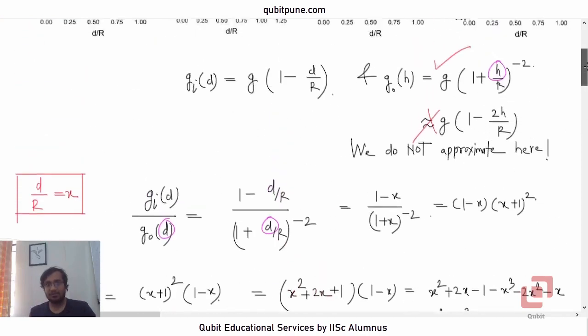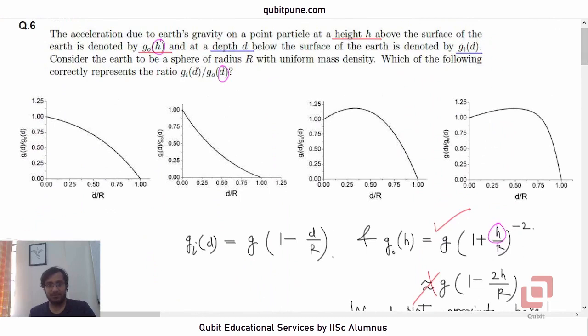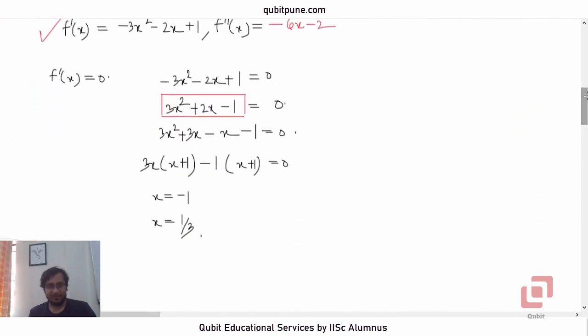Now observe that in these four options, between 0 and 1, we have got two peaks here. One is here and the other one is here. Now this peak is somewhere in between 0.25 and 0.50, and this peak is somewhere close to 0.5 or it might very well be 0.5. So we can say we have actually got the answer and that answer is 1 upon 3.